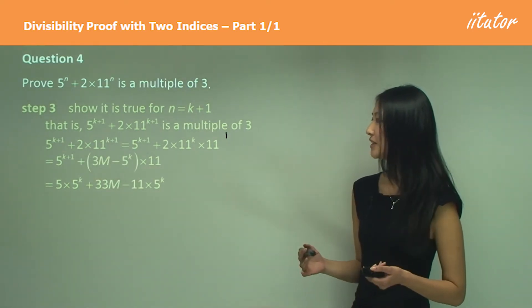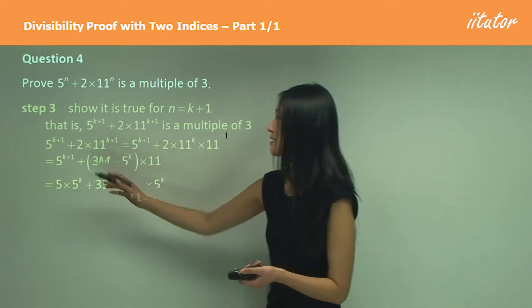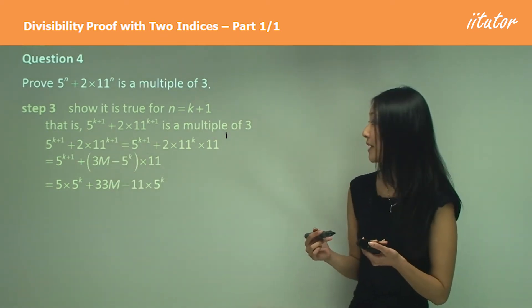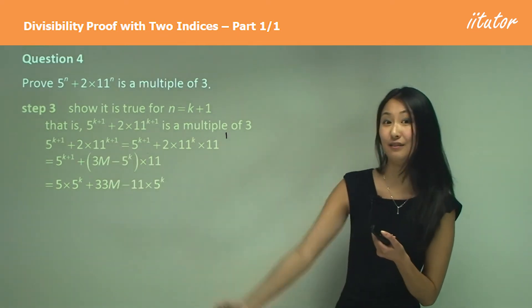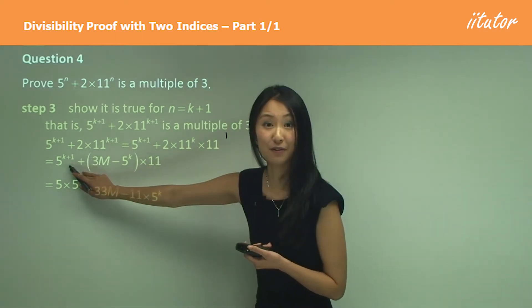If we just have 5^(k+1) there, that's really not going to help us because at the end of the day, what we want to be able to do is to take out a 3, and we can't take out a 3 from that.